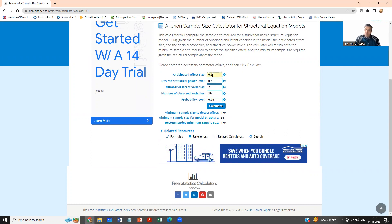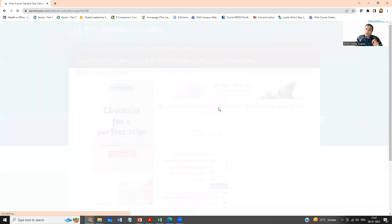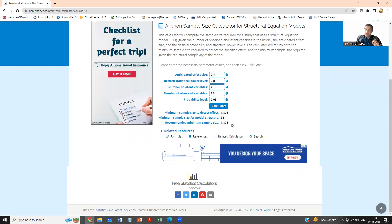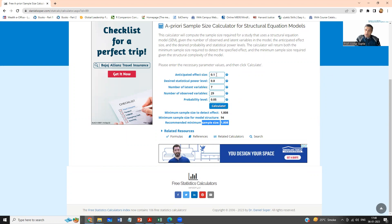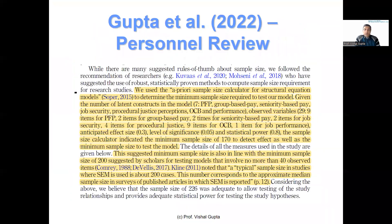So that means a sample size of 170 is good enough. Now if you want to, you can do different permutations and combinations. For example, let's say you want to detect a very small effect size - everything else remaining the same. If the effect size is 0.1, you want to detect a small effect size, you will see that the sample size goes up, which is about 1,800. So 0.3 is good enough if you want to report in your work.